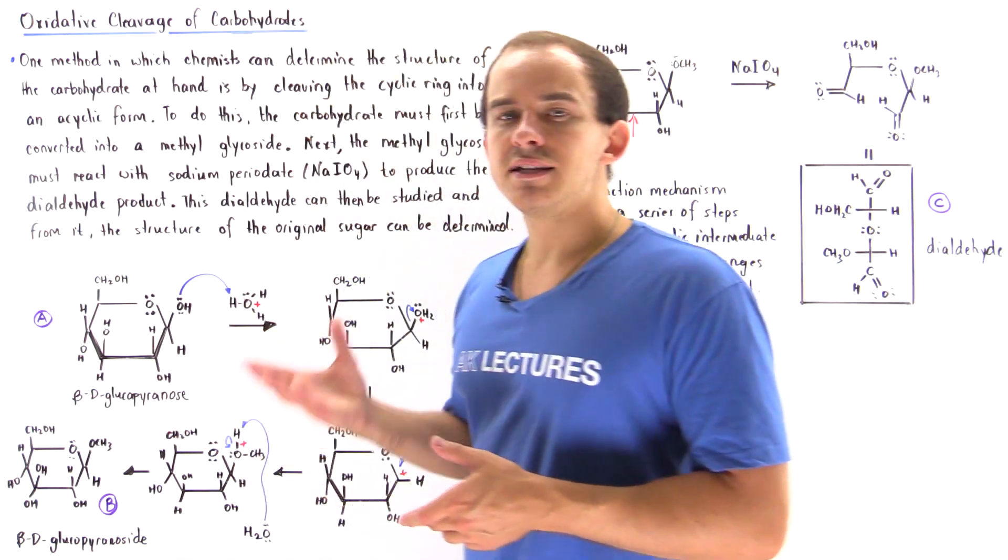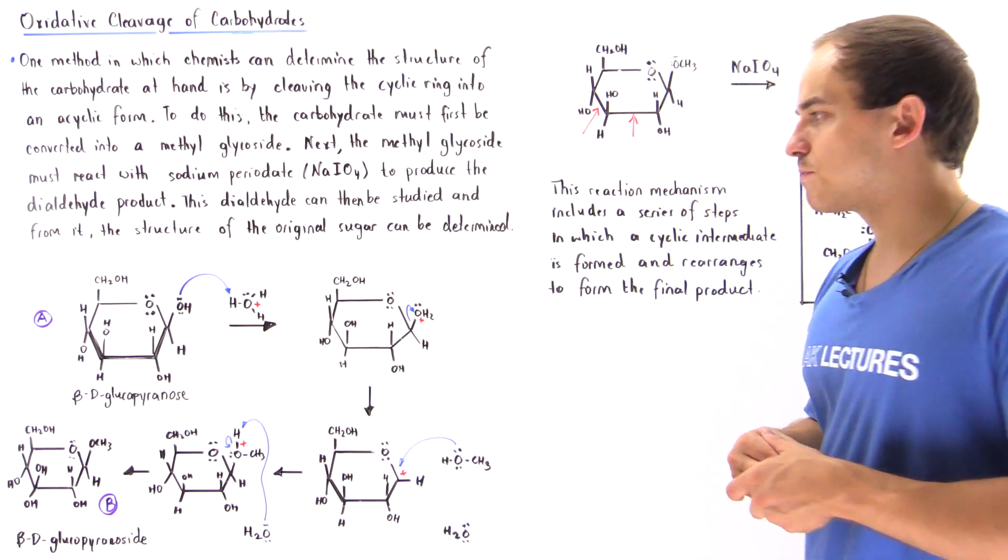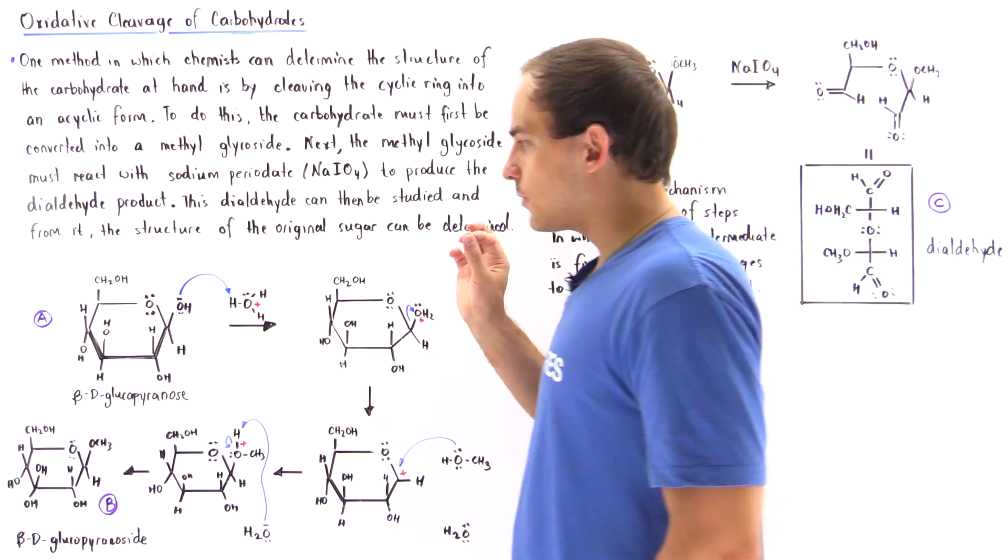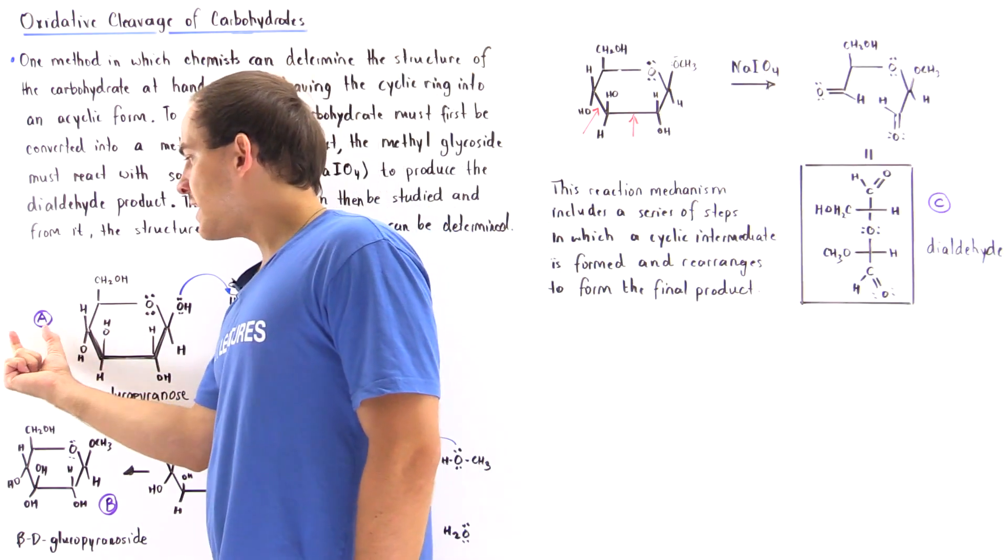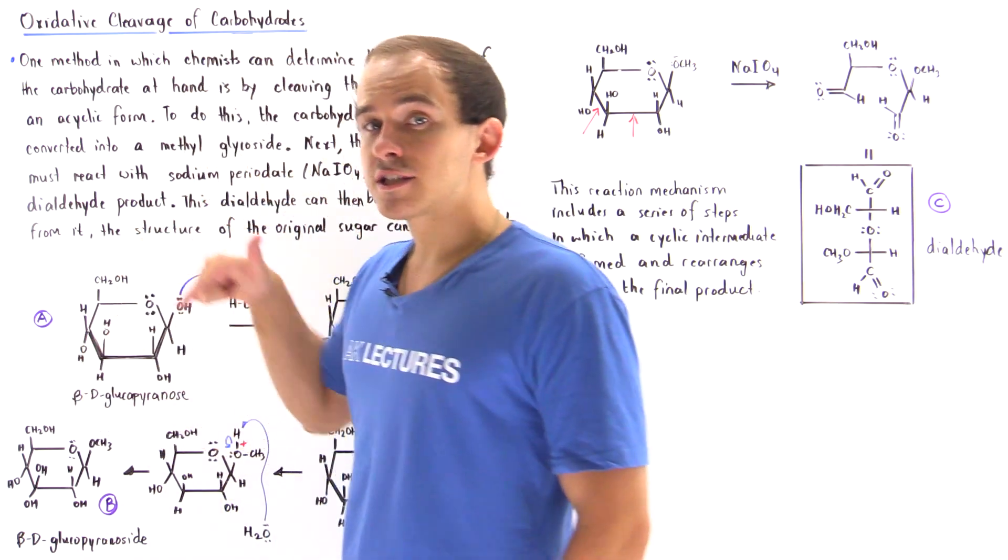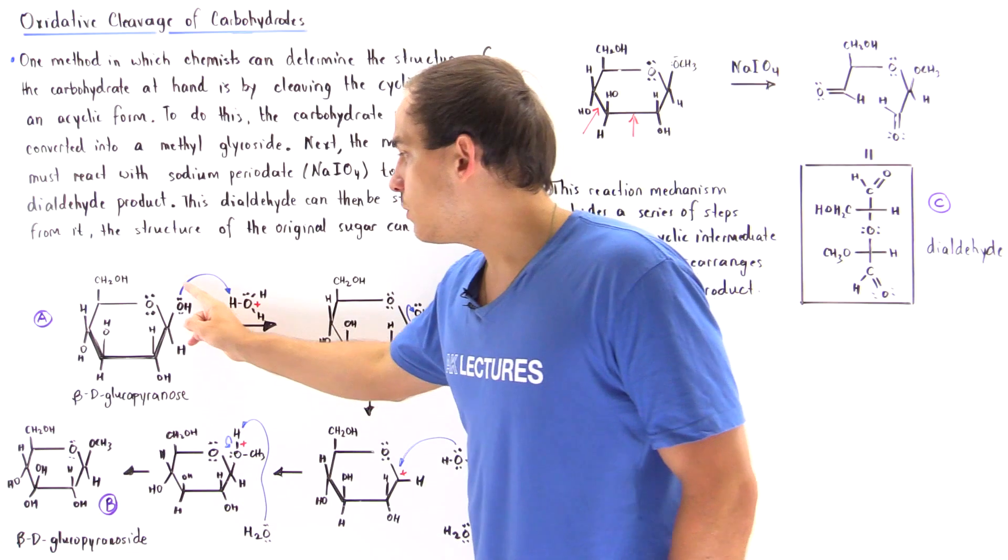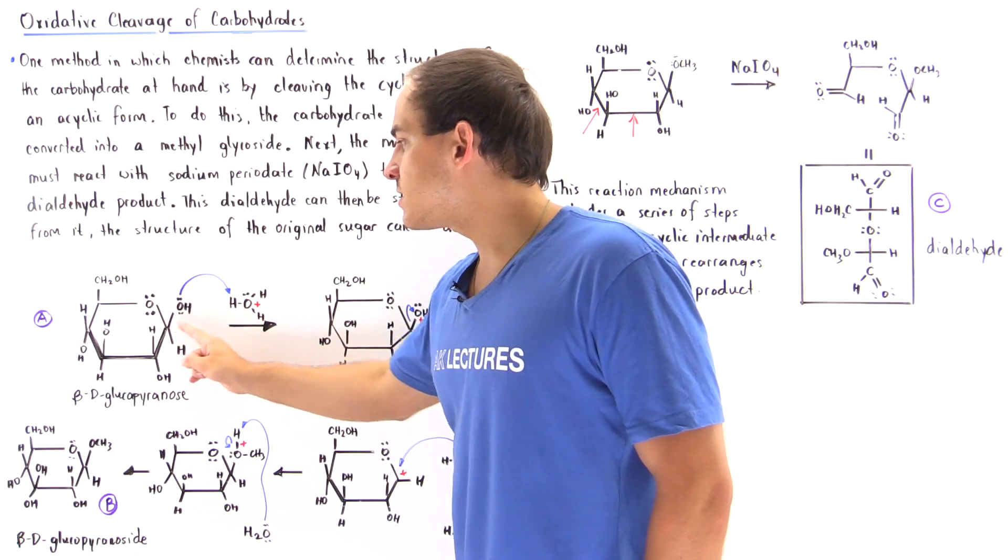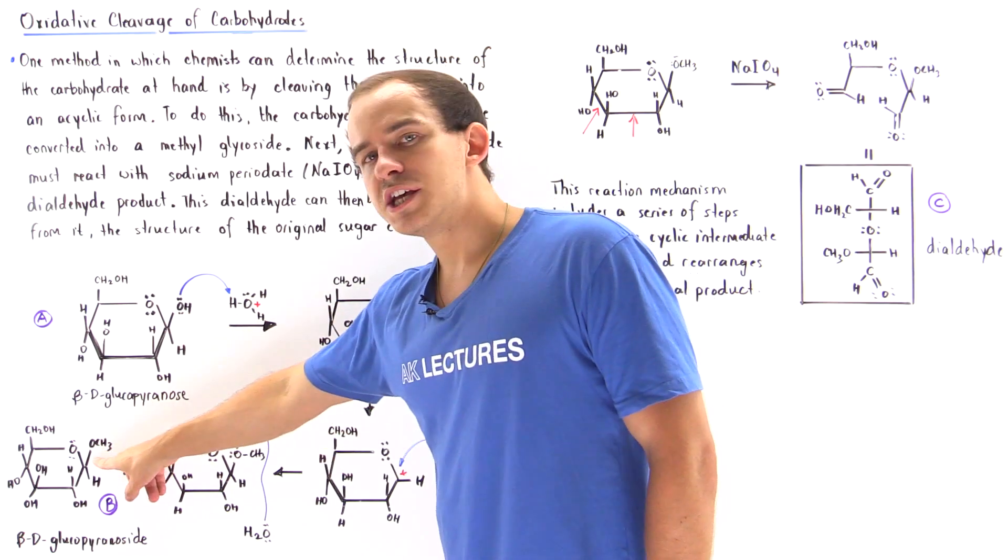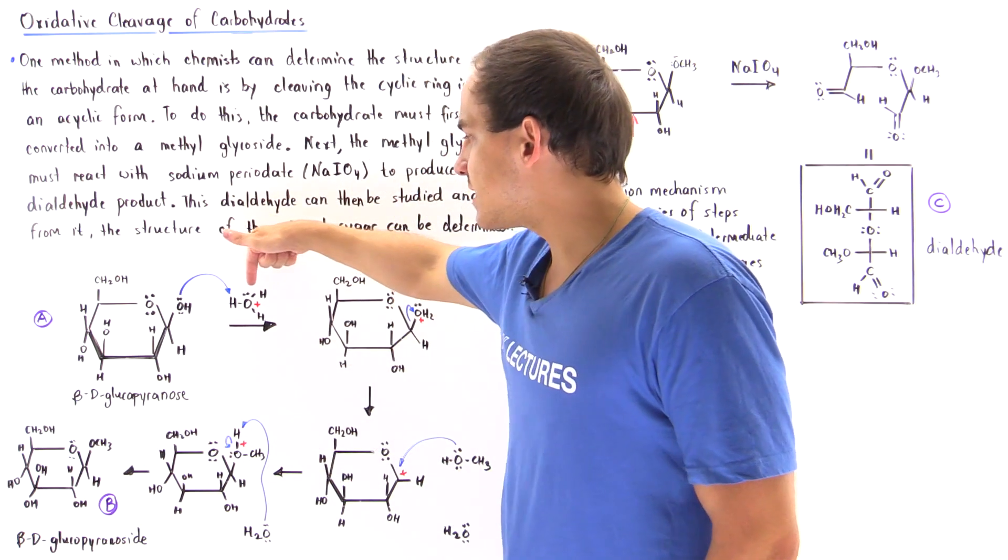So let's begin with our sugar molecule. Let's suppose we're using beta-D-glucopyranose. So basically in the first several steps, we have to take the sugar molecule and transform it into the methylglycoside in which we basically replace this hydroxyl group with this methoxyl group.